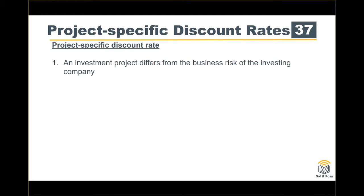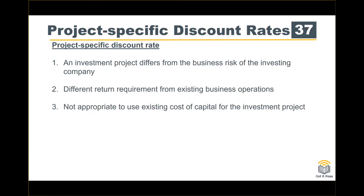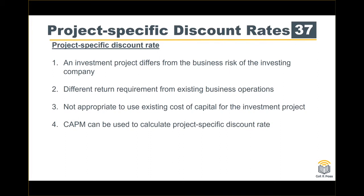The background is that an investment project differs from the business risk of the investing company, and has different return requirements from existing business operations. For example, a department store is different from real estate — different investment projects have different required rates of return. If you are using the existing cost of capital to discount a new investment project's cash flow, it is not appropriate because the business risk is different. If we apply WACC, it implies the same business risk level, but if you have different industries or different investments, you have to apply a different discount rate. This is where the Capital Asset Pricing Model (CAPM) comes in.